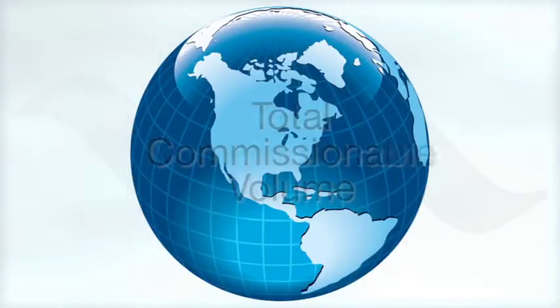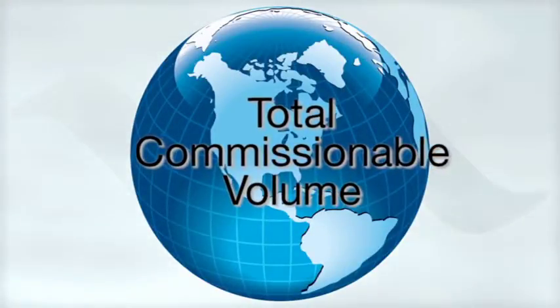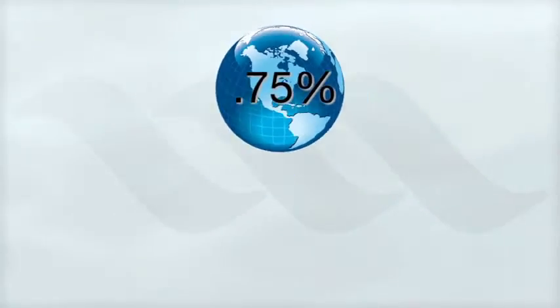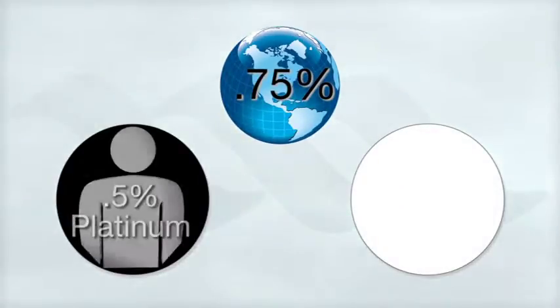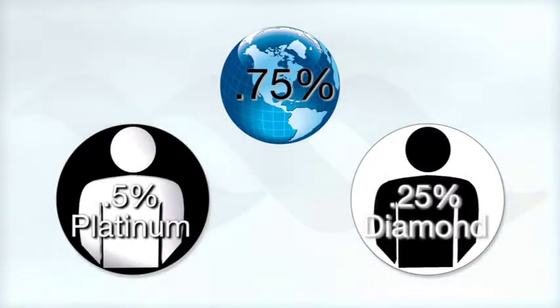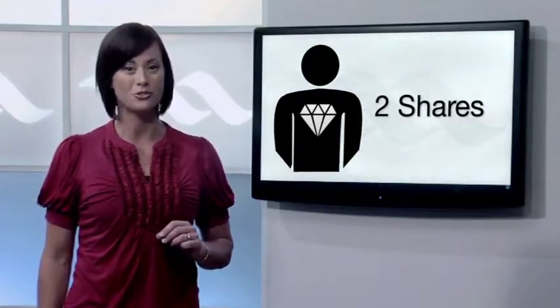When you advance to platinum and diamond levels within Max International, you automatically become eligible for shares in the platinum and diamond leadership pools. These pool bonuses are calculated on the global CV, that's the total commissionable volume generated throughout the company. 0.75% of this amount is placed in two separate pools, 0.5% in the platinum leadership pool and 0.25% in the diamond leadership pool. Although all platinum and diamond associates qualify to participate in this leadership pool, if you enroll as a diamond pack associate and reach platinum or diamond level, you will receive two shares instead of one share in the platinum and diamond leadership pool.